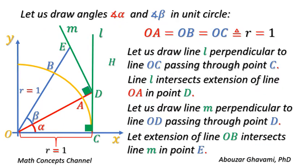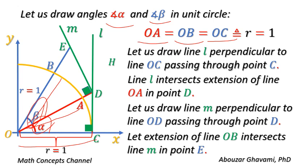Let us draw angles alpha and beta in unit circle. The length of radius OA equals the length of radius OB equals the length of radius OC equals the length of radius of unit circle, that is equal to 1. Let us draw line L perpendicular to line OC passing through point C.